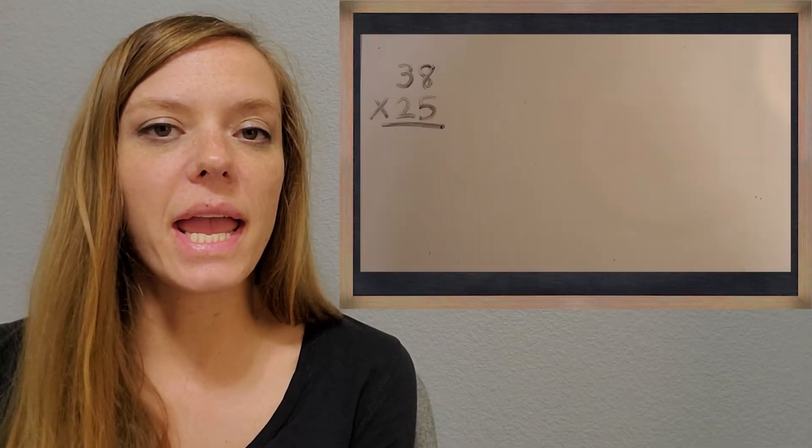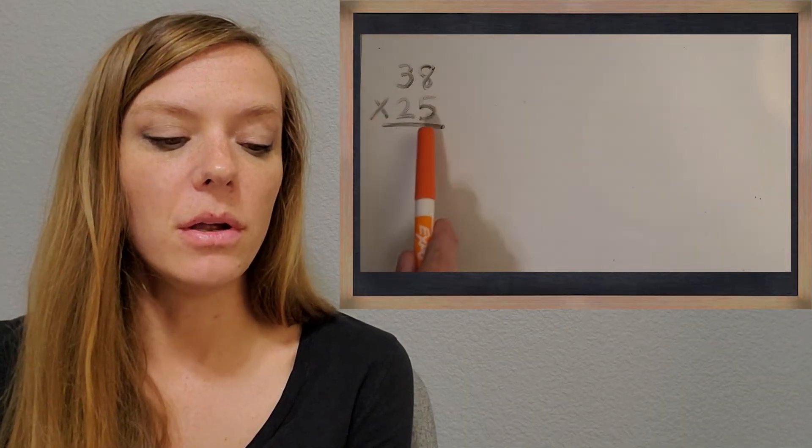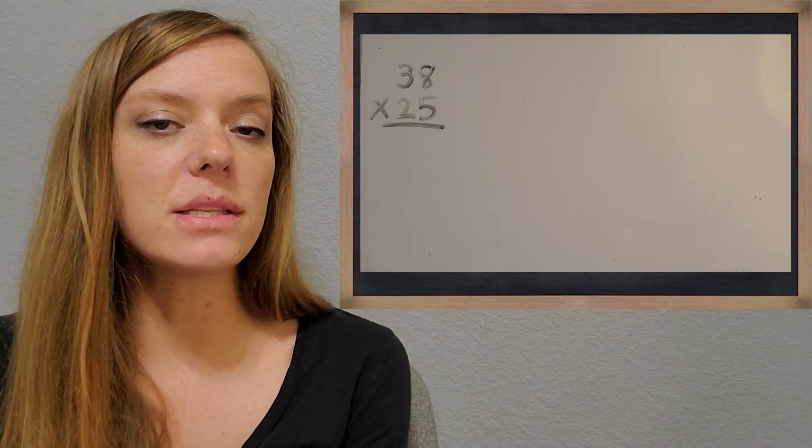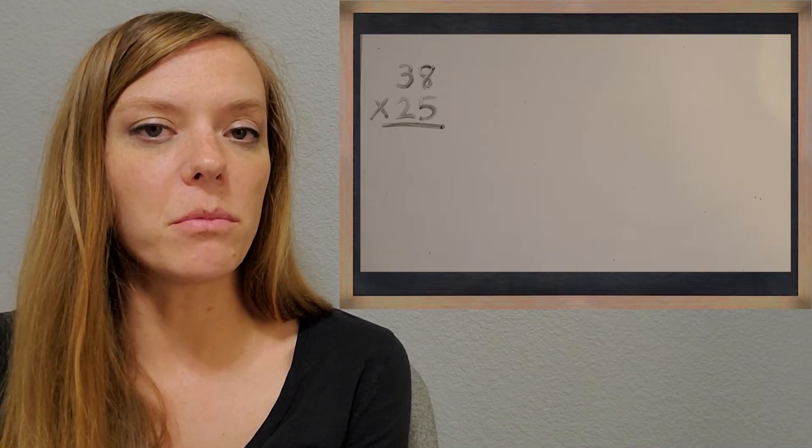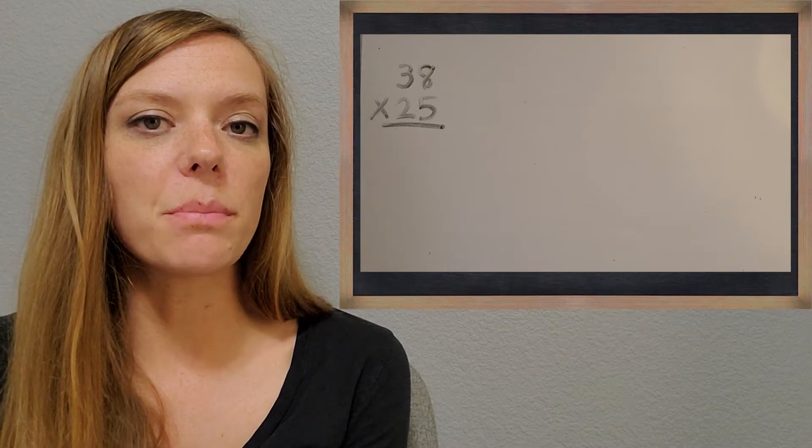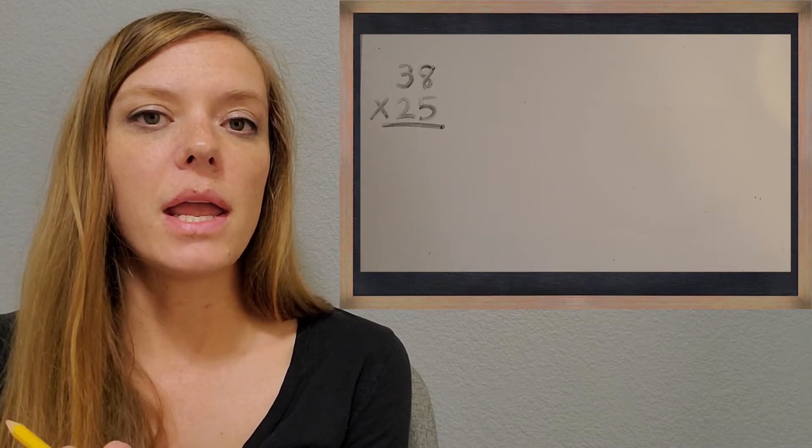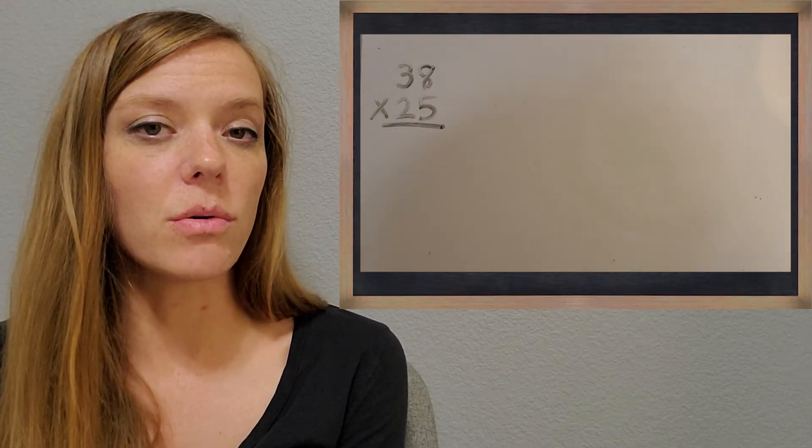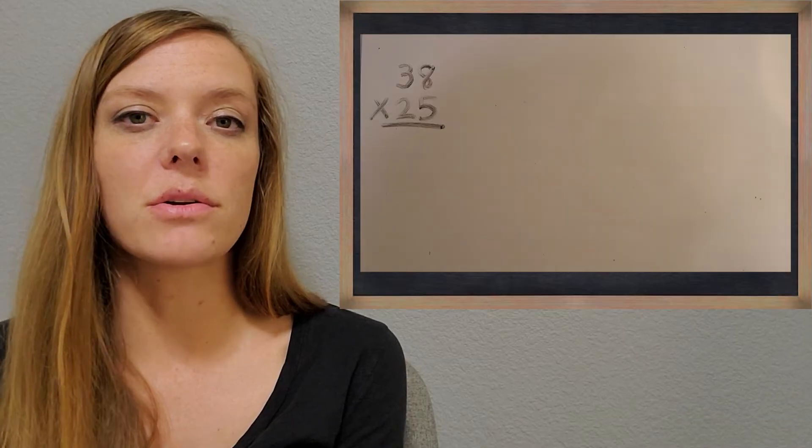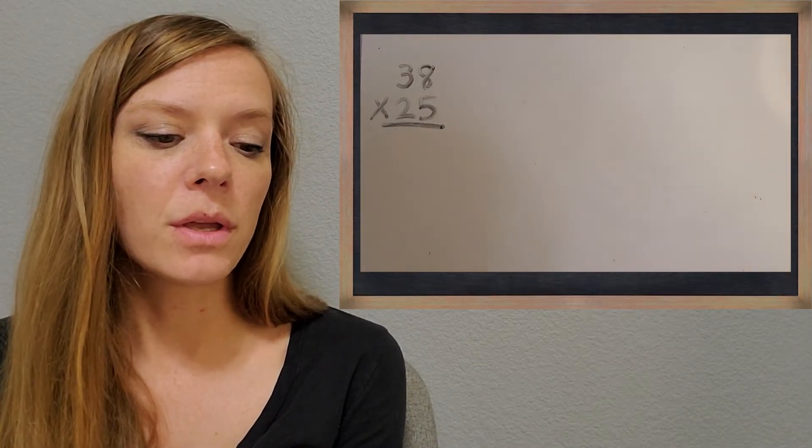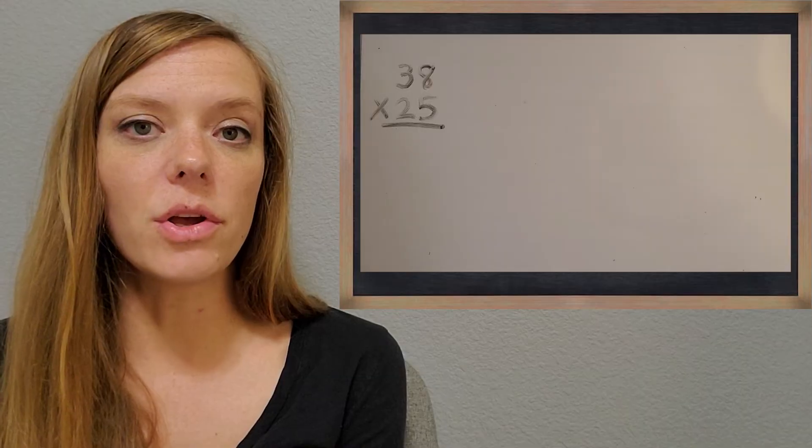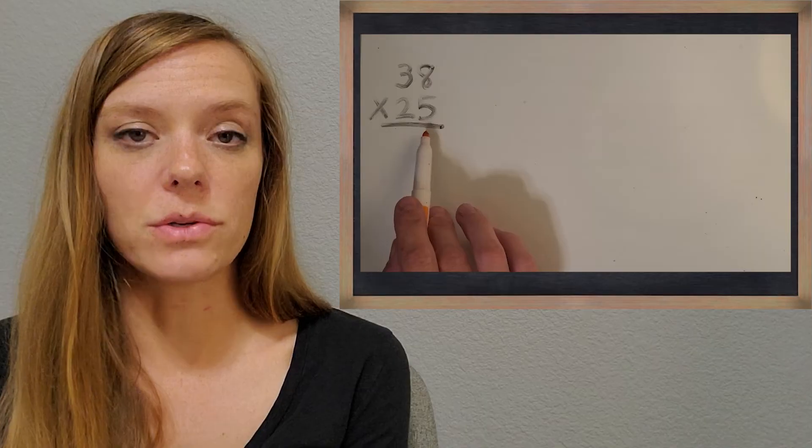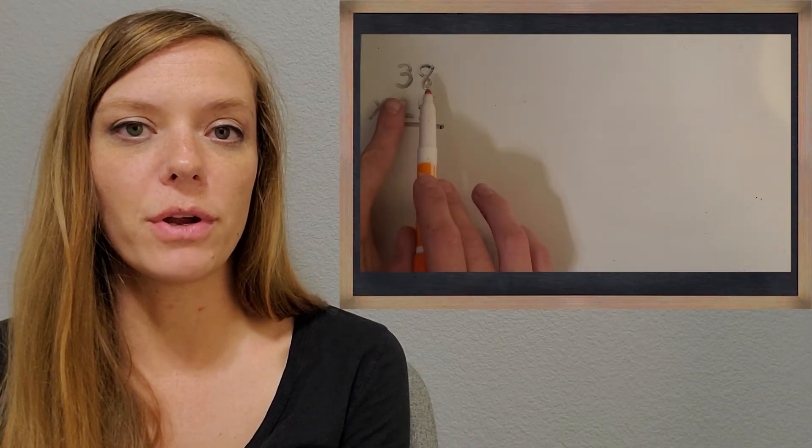All right, now we're going to try a two digit times two digit number. So 38 times 25. And we can solve this the same way. It's going to be a little bit more challenging, but we can still use the place value and what a digit is worth to help us make this a little bit easier. So break it up into chunks that are easier to work on with mental math. So let's just take a look at 38 times five first. So let's just kind of break it up into different pieces.